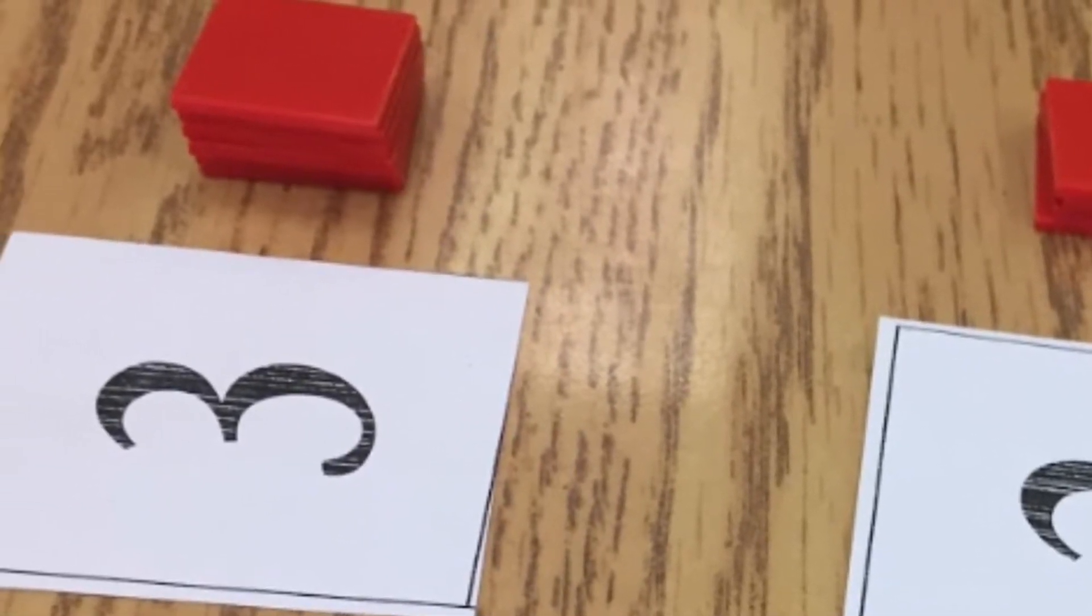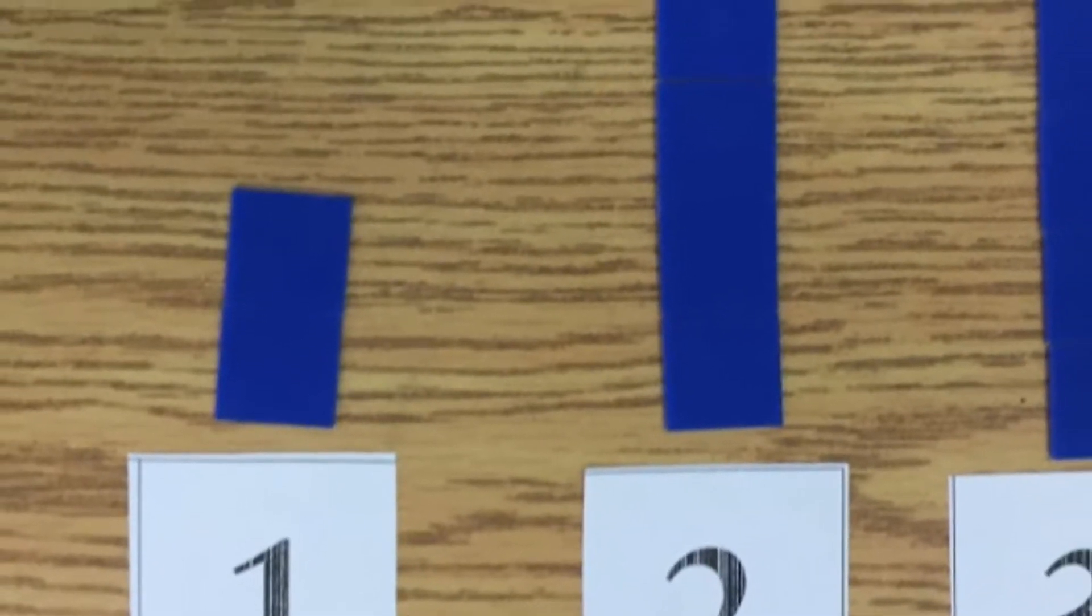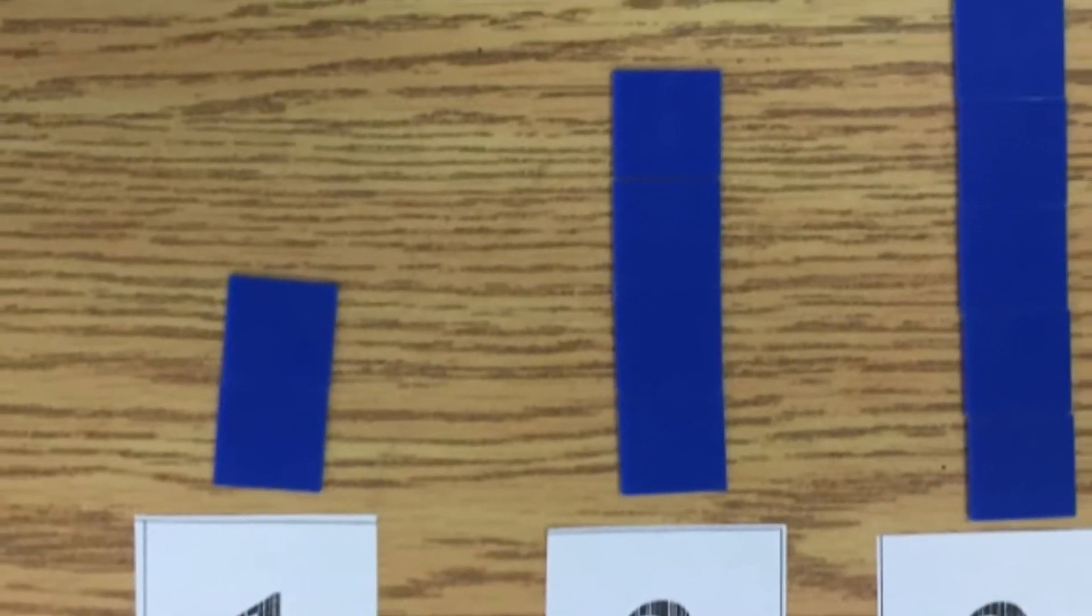Some students did it in vertical stacks, some did it in flat stacks on the table like this example. So we see one times two is two, two times two is four, three times two is six.